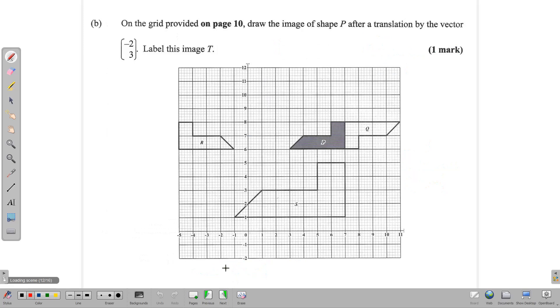Next, we have another part of the question that says, on the grid, draw the image of shape P after a translation by the vector negative 2, positive 3. This negative 2 is the X number, and this 3 is the Y number. The X number goes horizontally, and the Y number goes vertically, up and down. The idea here is we need to move this shape by this vector. Since we have the grid and the vector, we can simply count. Negative 2 means we're going this direction, and positive 3 means we're going up. Let's start with this point.